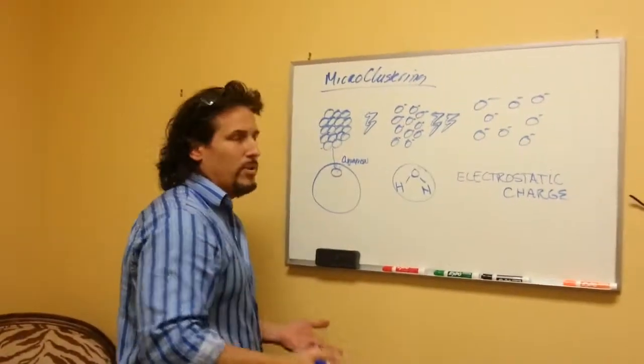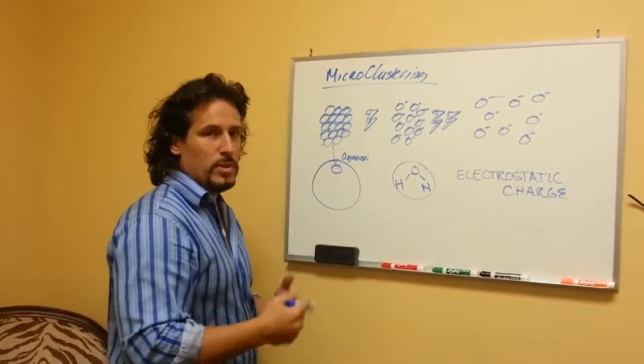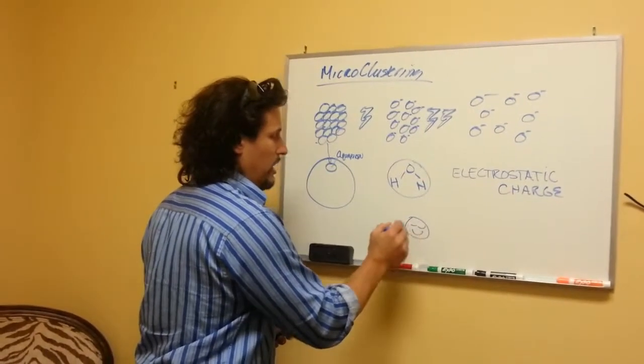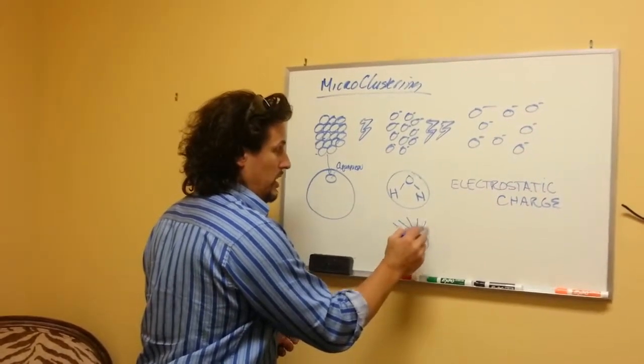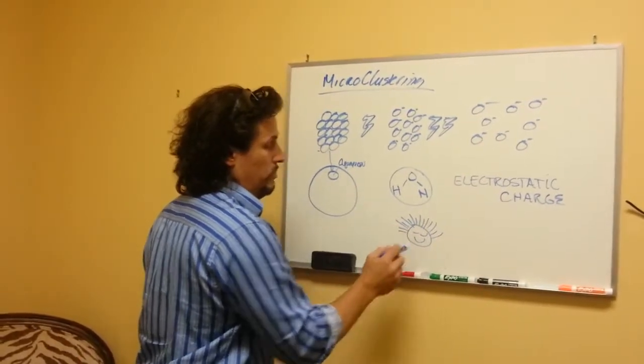The simplest example that makes sense is if you've ever seen a kid on a trampoline or playing with something, and their hair is just all standing up on end, and each piece is spread out, separated away from the others.